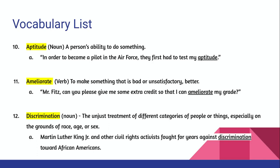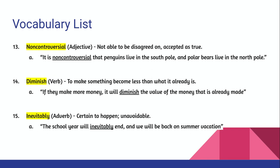Number twelve is 'discrimination,' a noun meaning the unjust treatment of different categories of people or things, especially on the grounds of race, age, or sex. Number thirteen is 'non-controversial,' an adjective meaning not able to be disagreed on — something that is accepted as true by all parties. Number fourteen is 'diminish,' a verb meaning to make something become less than what it already is. And number fifteen, the last vocabulary word, is 'inevitably,' an adverb meaning certain to happen, or unavoidable.